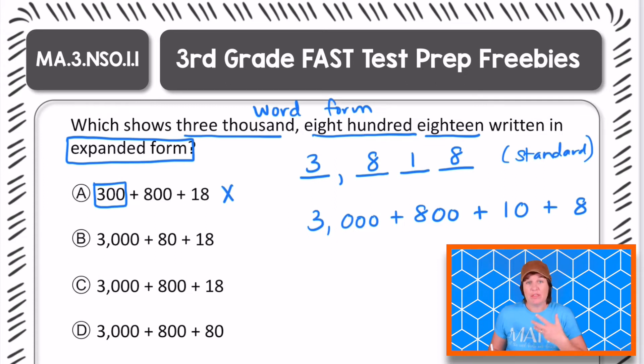Choice B we have 3,000 plus 80 but that 80 should be what? 800. That's what makes it wrong so I'm going to eliminate that one.